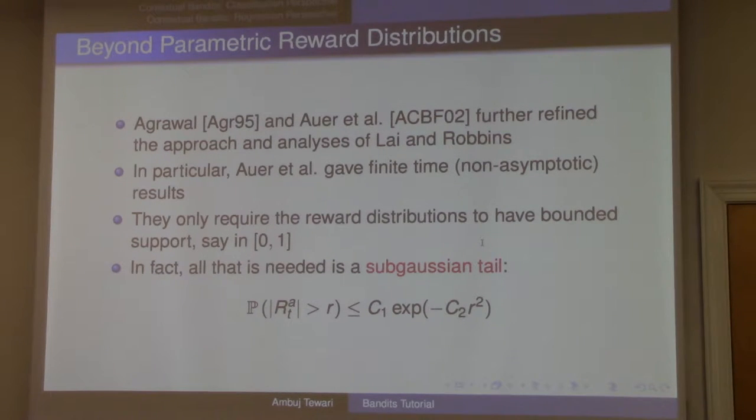The thing to note is that there is some constant in front of log t which depends on the distributions you're talking about. If I change the bandit problem, if I change the distribution, this constant is going to change, but this logarithmic rate is still there. So as I said, they showed matching lower and upper bounds, which was kind of neat.